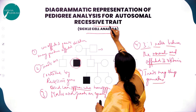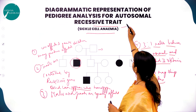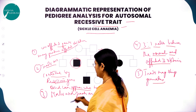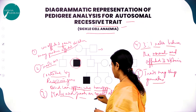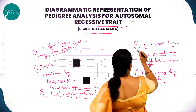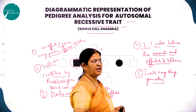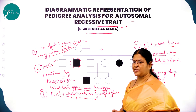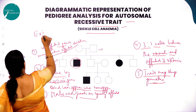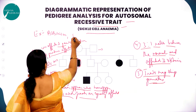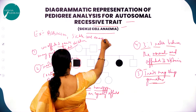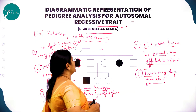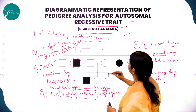In autosomal recessive trait, affected and normal individuals occur in the ratio of 3:1. The traits are controlled by recessive genes that appear when homozygous, and males and females are equally affected. Examples include albinism and sickle cell anemia, where the red blood cells are half-moon or sickle-shaped.